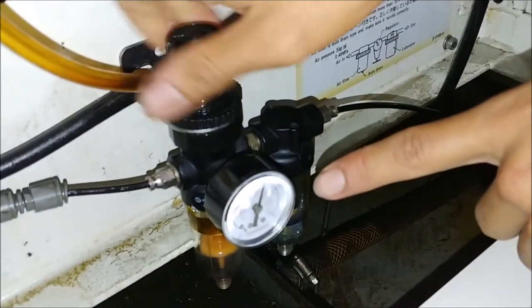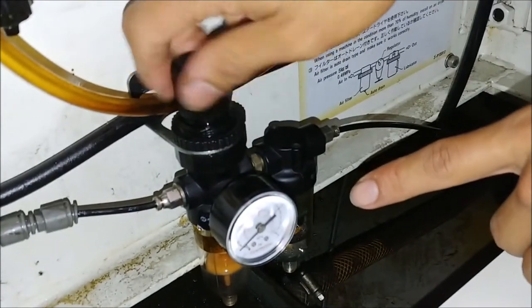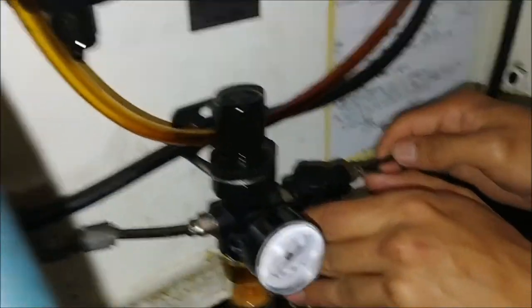Unscrew the valve until the gauge pressure reads zero. If the valve is locked, pull up on it to unlock. Depressurize the supply side of the regulator by closing the valve or disconnecting the fitting that supplies air to the supply side of the regulator.